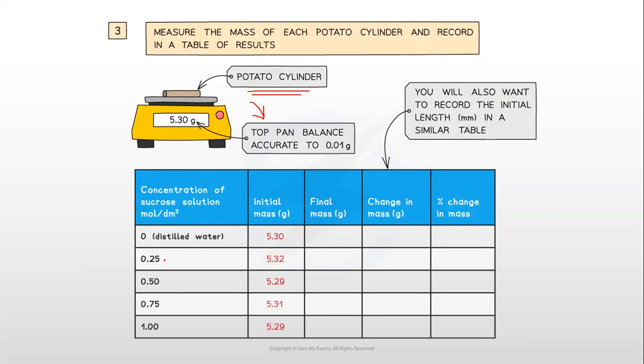The mass of a potato in the 0.25 concentrated solution, 0.5 concentrated, 0.75 or 1.0 concentrated solution. We have measured all the initial masses which are approximately the same. Now you can see that the concentration is increasing as we go down, which means the water potential is decreasing.